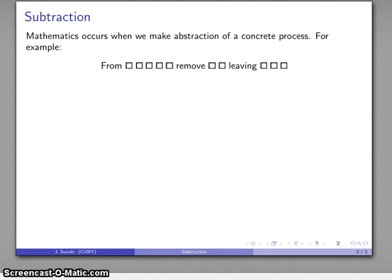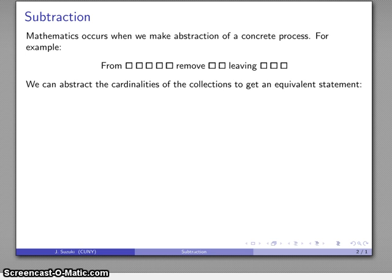And again, we can choose what parts of the process to abstract, but in the case of most arithmetic operations, what we're abstracting is the cardinalities of the collections. So this collection has a property of cardinality—there's a number of things in it, likewise this, likewise that—and so I might get some statement: from 5 remove 2 and that leaves you with 3.